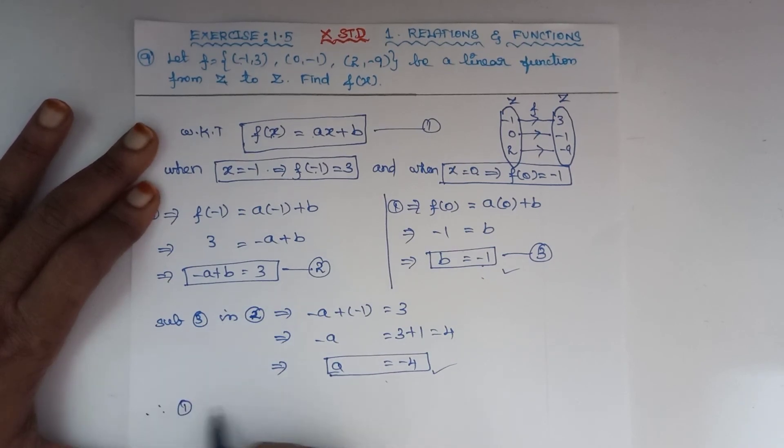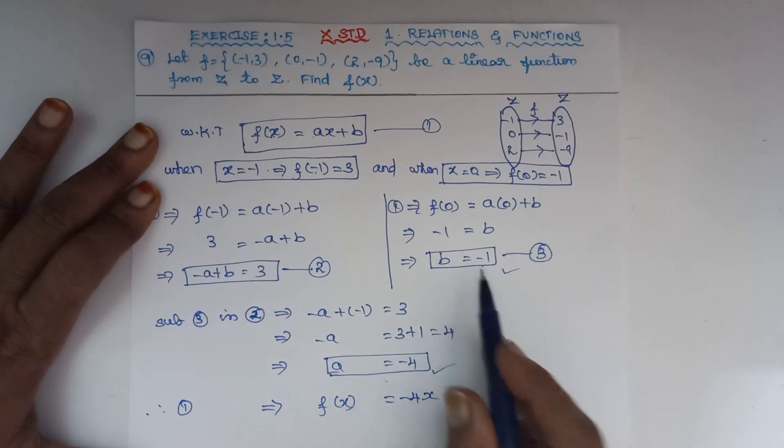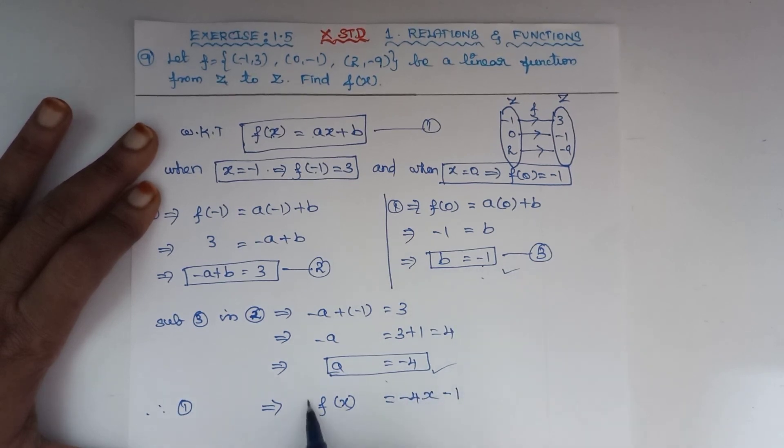Therefore, from equation 1, f(x) = ax + b. Substituting a = -4 and b = -1, we get f(x) = -4x - 1. This is f(x). Thank you.